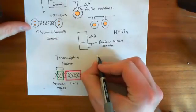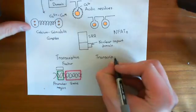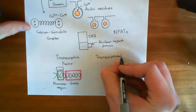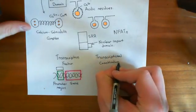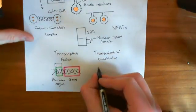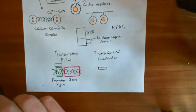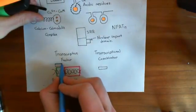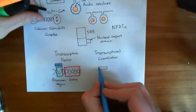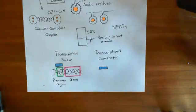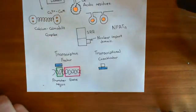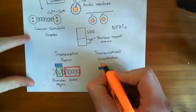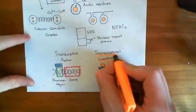What's a transcriptional co-activator? Transcriptional co-activators bind to transcription factors and change which promoter regions they are going to bind to and what effect they're going to have on those promoter regions. So if this is our transcription factor in blue, then the transcriptional co-activator — drawn in orange — is a molecule which will bind to the transcription factor and alter which genes it increases the expression of.